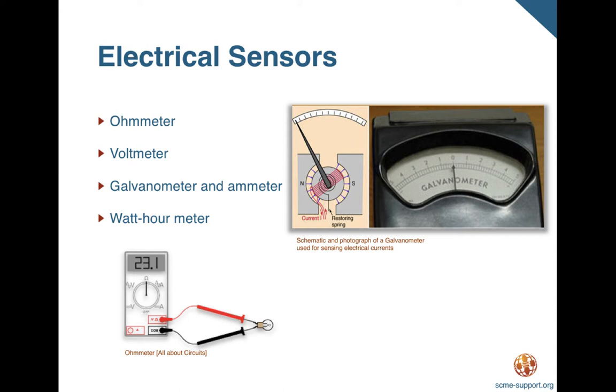This device uses two energy conversions to sense and quantify an electric current. These energy conversions are electrical to magnetic and magnetic to mechanical rotation.